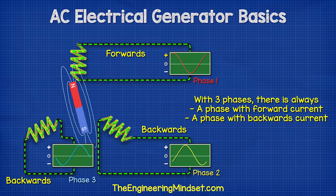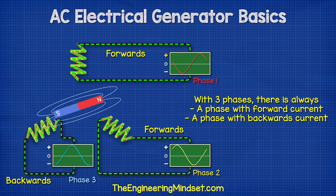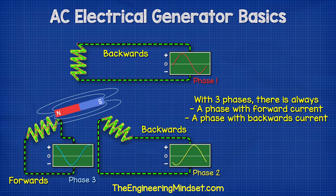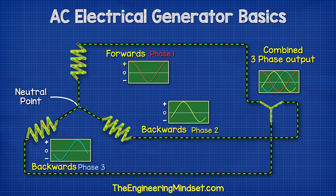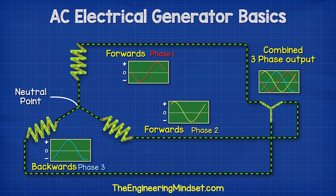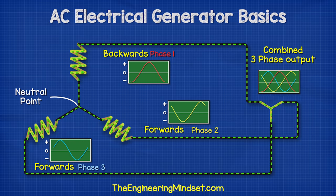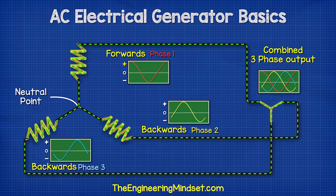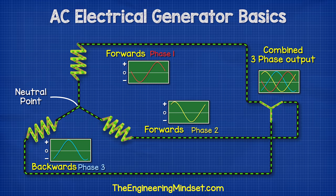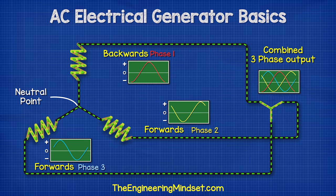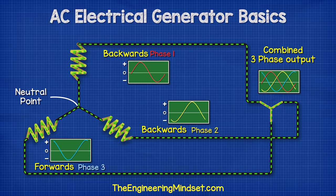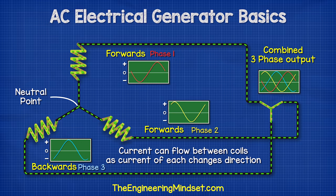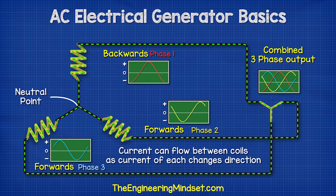Instead of having three separate coils and six wires, as the phases are always switching between forwards and backwards, we can connect the ends of the coils together. The current will then flow freely between each coil as it changes direction.